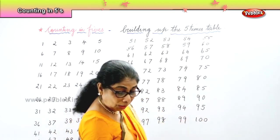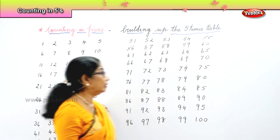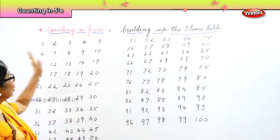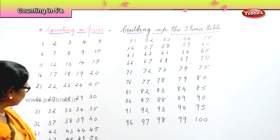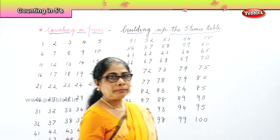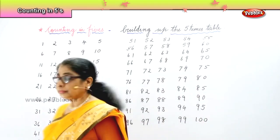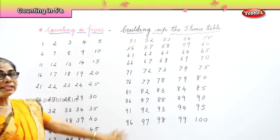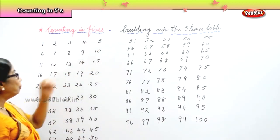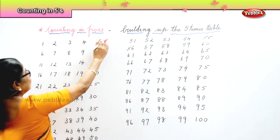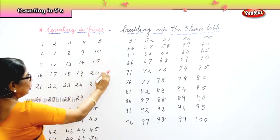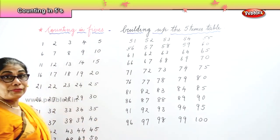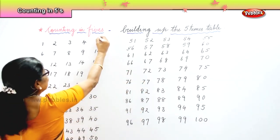Now, what we have done here is building up the five times table — you have all the numbers from one to hundred. Now look at one, two, three, four, five — we just made a pattern. Let us box it in. Five, ten, fifteen, twenty, twenty-five, thirty, thirty-five, forty, forty-five, fifty. You got the five times table.